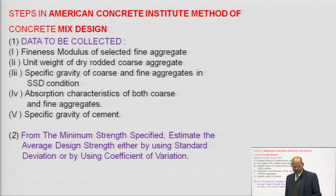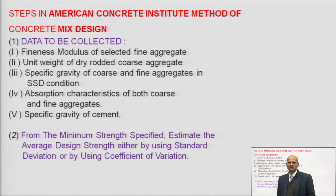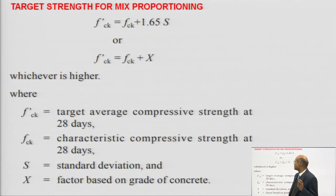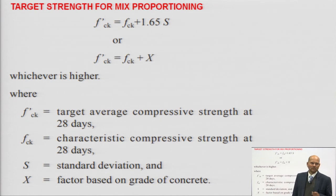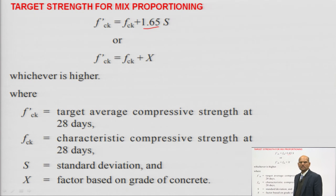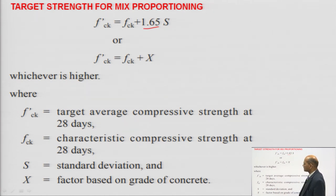Once data is collected, we determine the minimum specified strength. Depending on the grade of concrete, we calculate the mean target strength using the standard deviation or coefficient of variation method. This equation is taken from IS 10262-2019. In India, we use a 95% confidence limit, meaning only 5% of material may fall below the characteristic strength. FCK in Indian standard is based on cube strength.